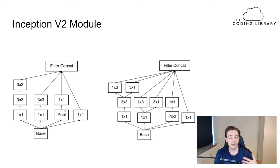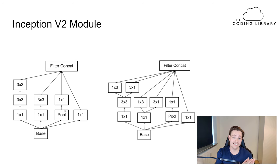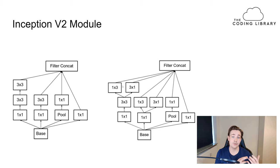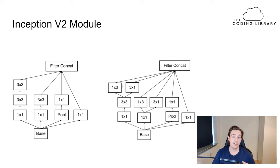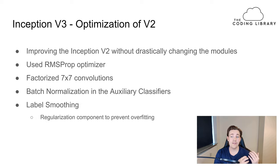Another improvement in Inception version 2 was factoring 3x3 convolutions into a 1x3 convolution followed by a 3x1 convolution, then concatenating those results. This further reduces computational cost by over 30% for larger convolutional kernels. This was a huge improvement — we can now apply larger convolutional kernels without incurring the heavy computational cost, making it feasible to train neural networks with larger kernels.